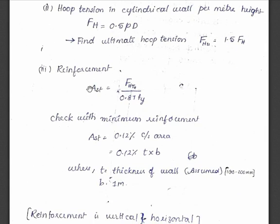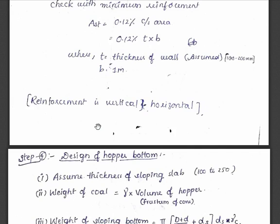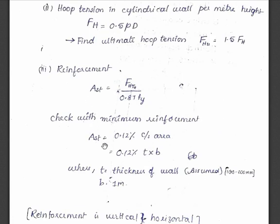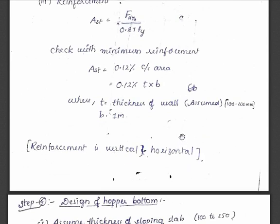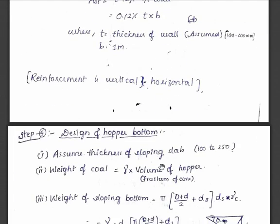For reinforcement, AST equals ultimate hoop tension divided by 0.87 Fy. We have to check this AST against the minimum reinforcement, which is 0.12% of the cross-sectional area. The cross-sectional area here is thickness multiplied by the width, where B is taken as 1 meter. The wall thickness is assumed from 100 to 200 mm. If the calculated reinforcement is more than the minimum, that is okay; otherwise we provide the minimum. This reinforcement should be provided both vertically and in circular rings — circular and longitudinal.